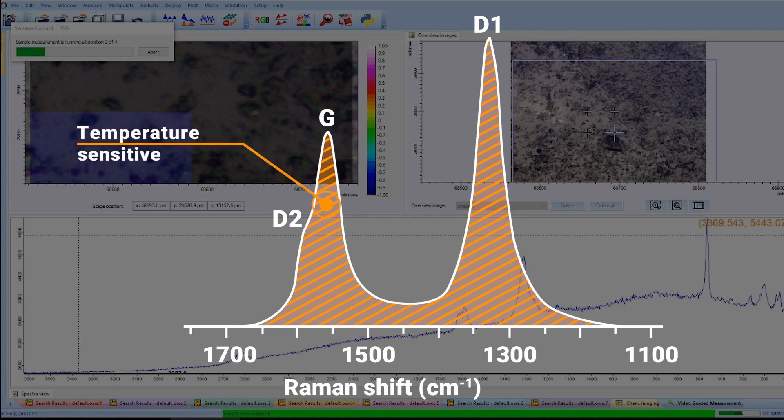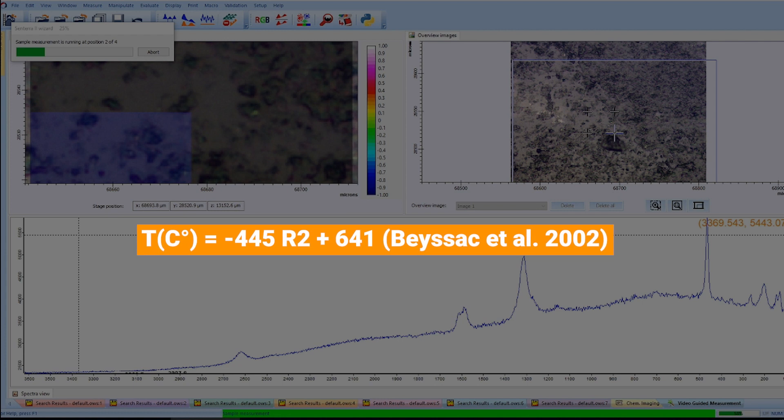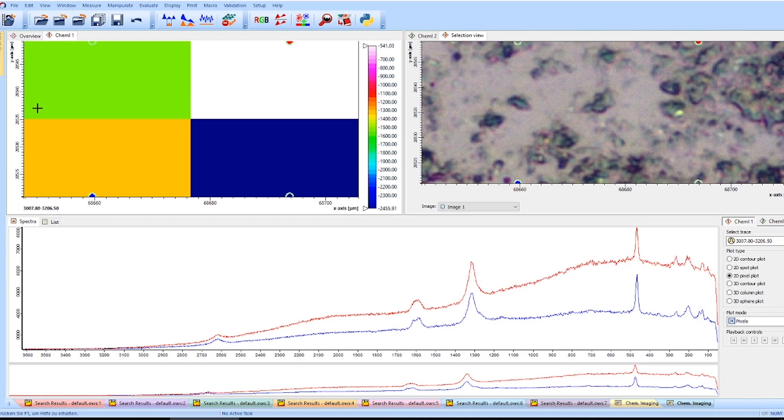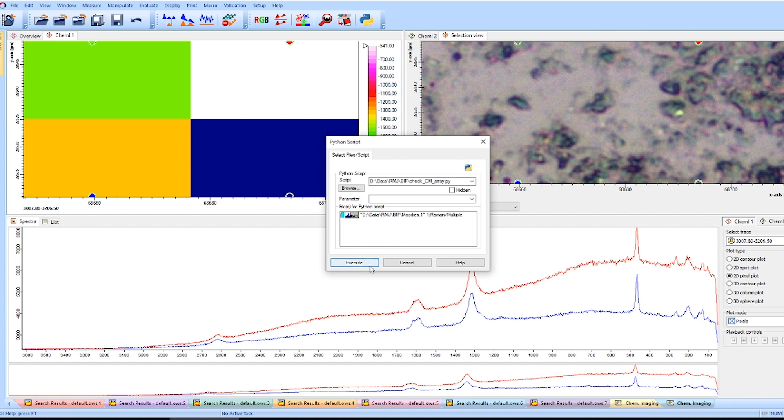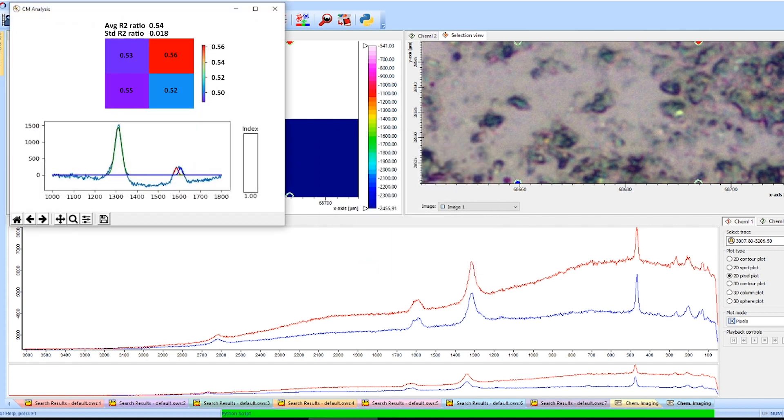Finally, the values are inserted into a special temperature-dependent empirical equation in order to quantitatively determine the peak temperature. Our Raman expert D created a Python script for this purpose, which simplifies the temperature determination for you.